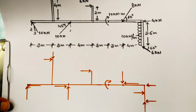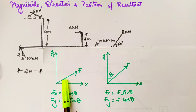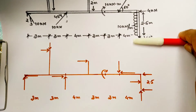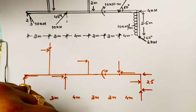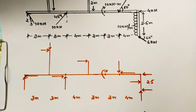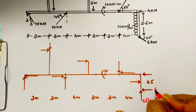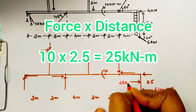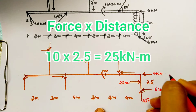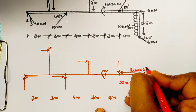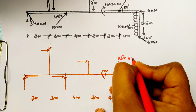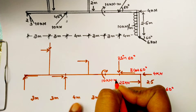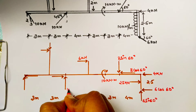Starting with the first force: from wherever theta is given, that component is cosine. In this question the angle is given from the x-direction, and this force is going in the negative x-direction. The sine component is from the x-direction reference, and cosine goes the other way. For the UDL, simply multiply the intensity by the total distance — 10 into 2.5. Force 4 is totally in the x-direction; since theta is given from x, x-component is cosine and the other is sine.